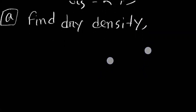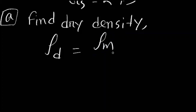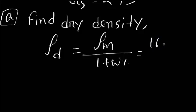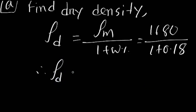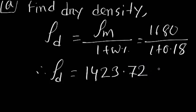We know dry density equals moist density over 1 plus moisture content. So dry density equals 1680 over 1 plus 0.18, which gives dry density equals 1423.72 kg per meter cube.